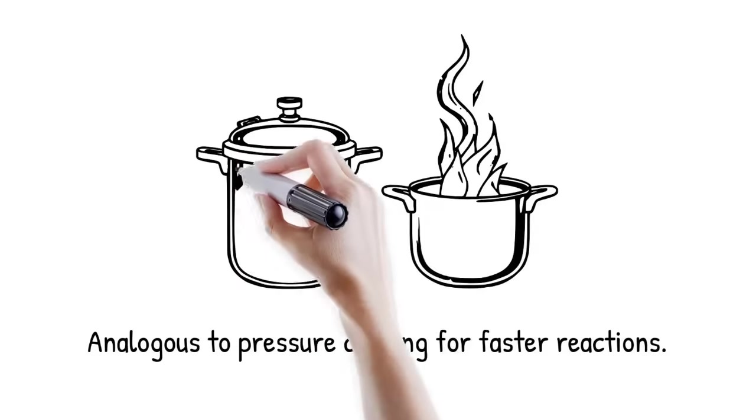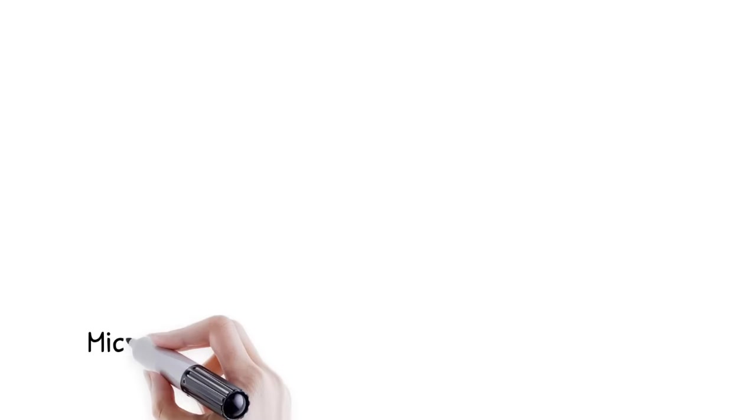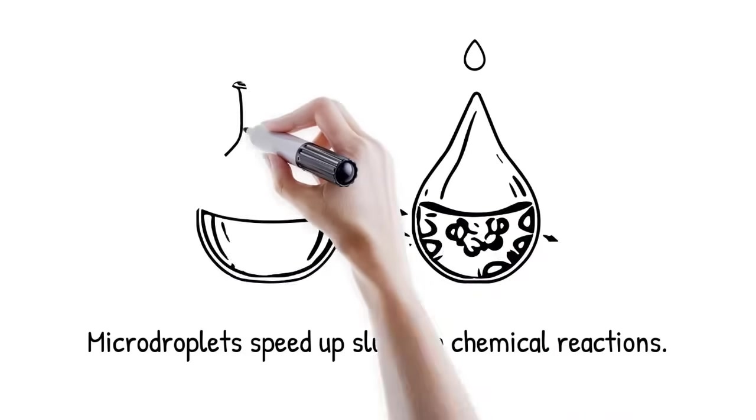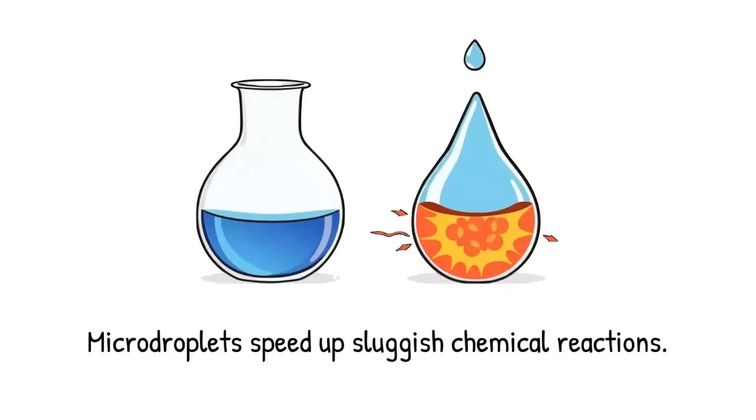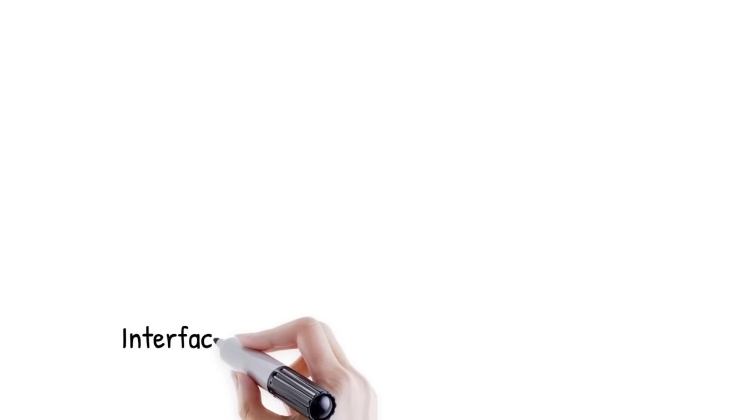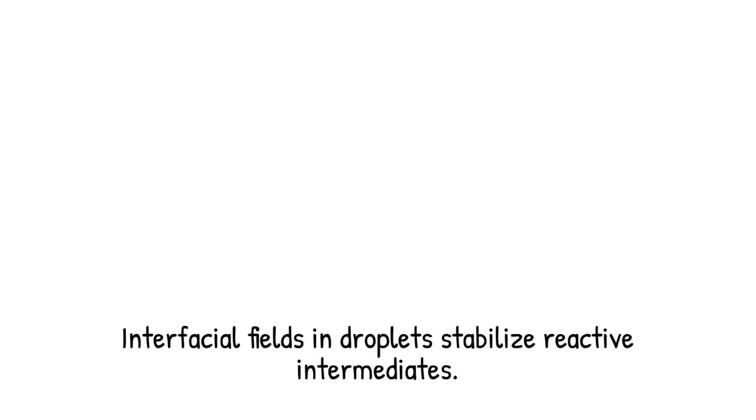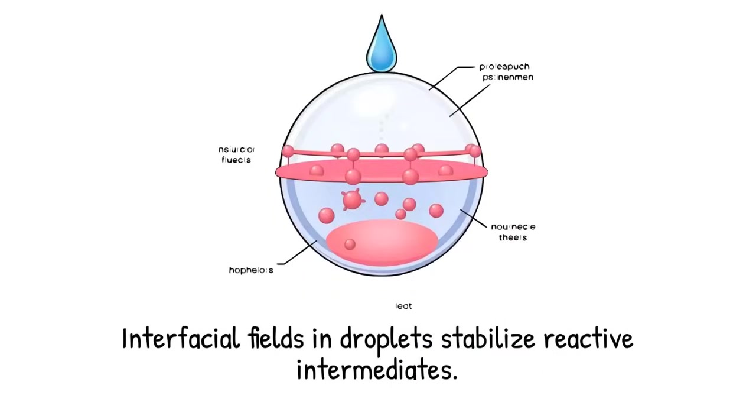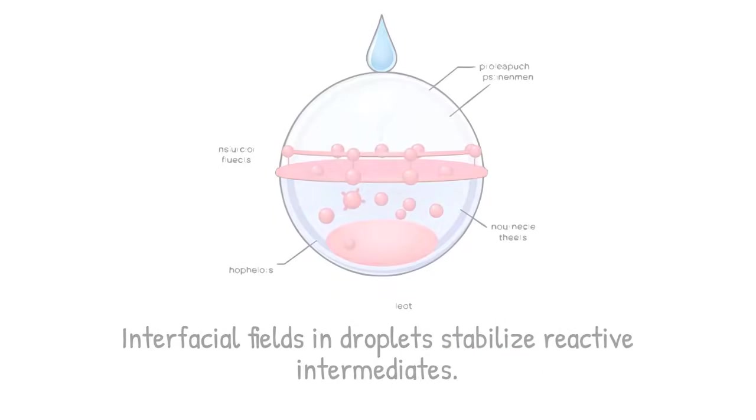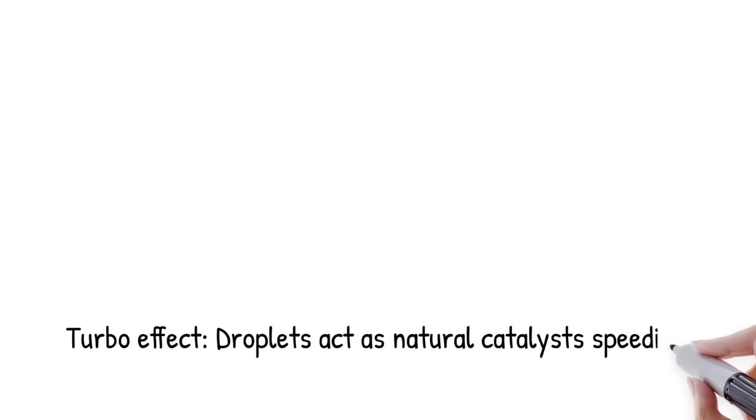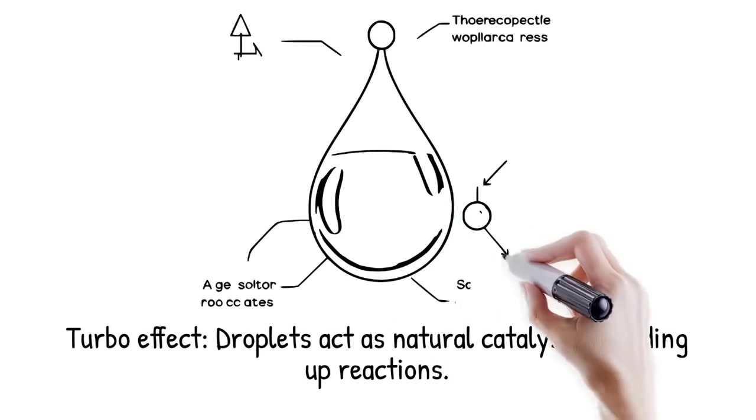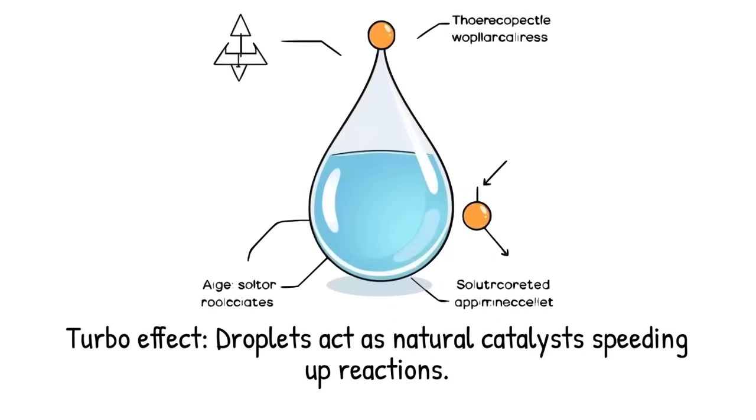One striking feature of micro-droplet chemistry is the acceleration of reactions that are nearly stagnant in bulk. Reactions that crawl toward completion, or never proceed at all, can increase in rate by orders of magnitude inside droplets. The unique interfacial fields and altered solvation stabilize reactive intermediates that would otherwise vanish. Confinement reduces the entropic cost of bringing molecules together. Droplets can therefore act as natural catalysts without requiring additional reagents.